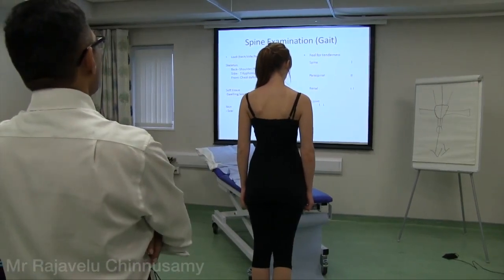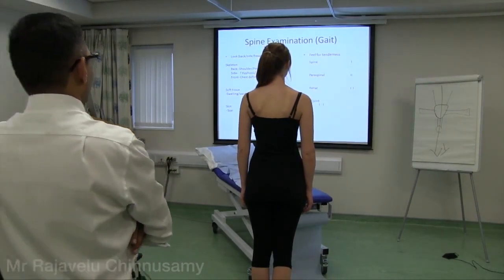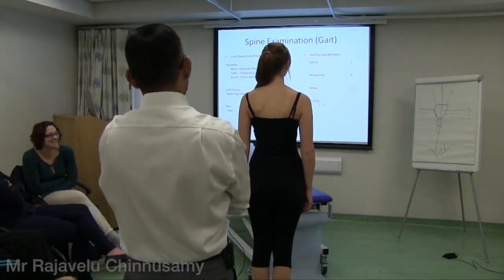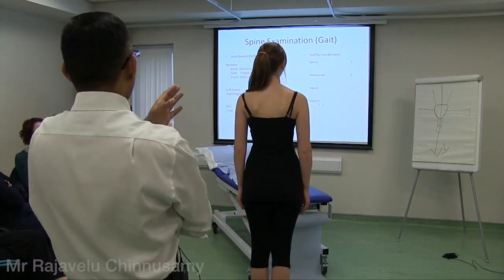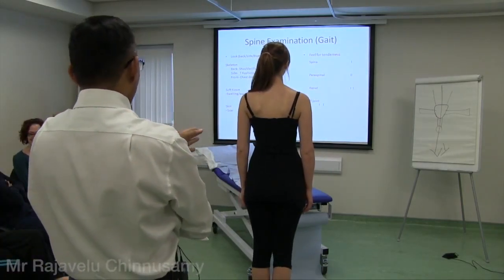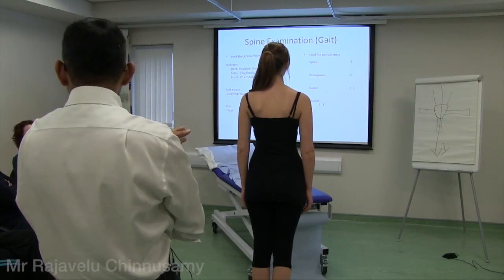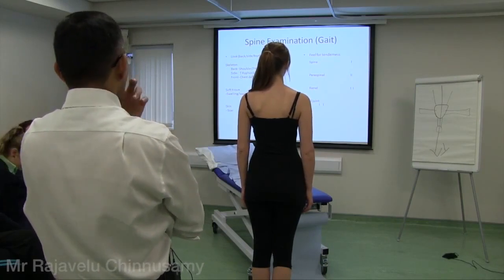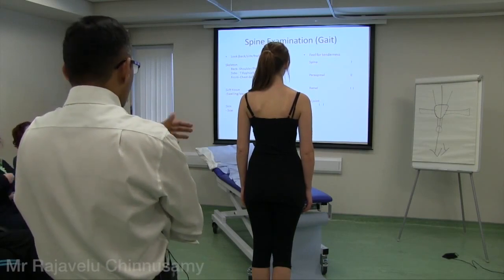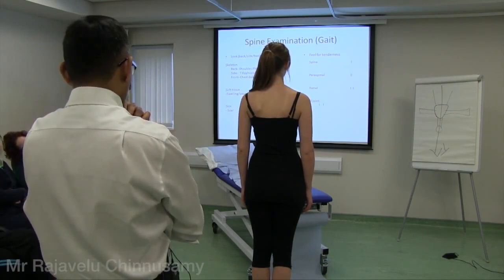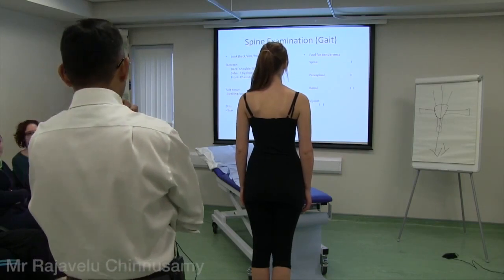Both shoulders are almost at the same level - it's just a style of standing. Both shoulders are at the same level, no obvious deformity of the spine. What you look for is scoliosis from this side. No obvious deformity of the spine, no obvious pelvic tilt. If there is a pelvic tilt, that means there is a lot of fixed deformity going on.